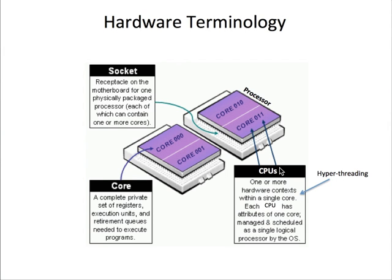To summarize the important points: a compute node can have multiple cores, and each core can support two threads of execution by sharing its functional units. This technology to do the sharing is called hyperthreading.